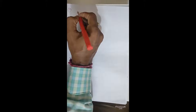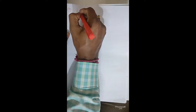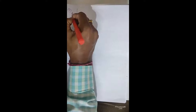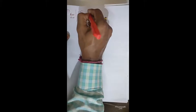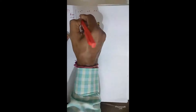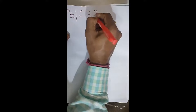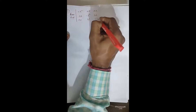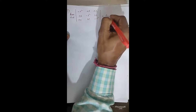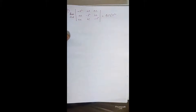Next problem, question number 3 — also very important. Prove that the determinant with rows (−A², AB, AC), (AB, −B², BC), (AC, BC, −C²) equals 4A²B²C².